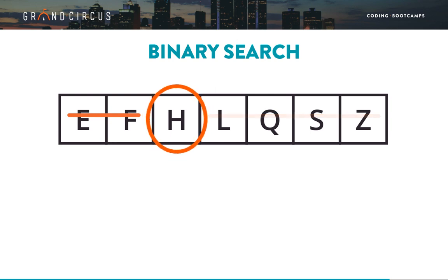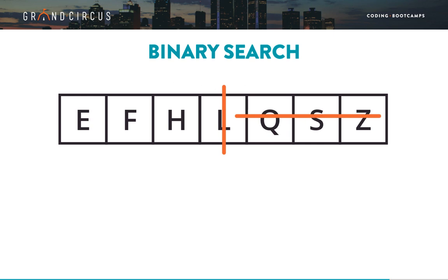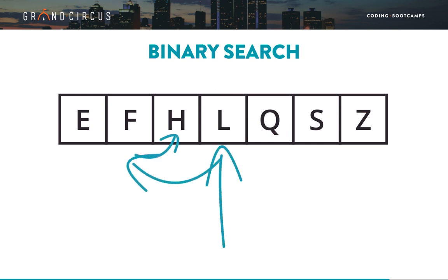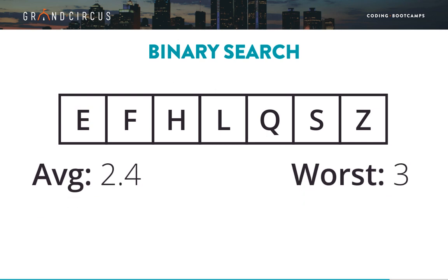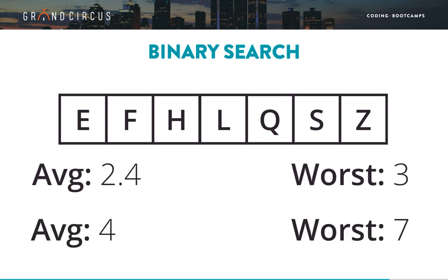Can you see why this is called a binary search? The word binary relates to having two things — each step of a binary search divides the remaining array into two halves. It took three steps to find the H, and that's the worst case. For an array of seven values, binary search will find the value in an average of 2.4 steps and 3 at most, compared to linear search which averages 4 and 7 at most.